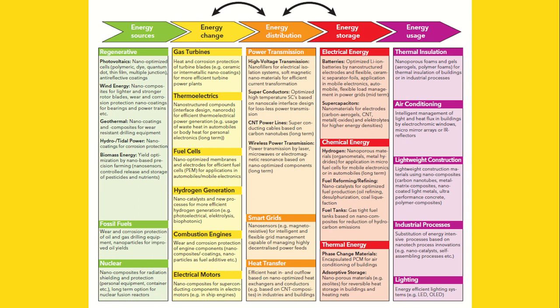The value-added chain includes: energy source, energy chains, energy distribution, energy storage, and energy use. Energy sources include regenerative, fossil fuels, and nuclear. Energy chains include gas turbines, thermoelectrics, fuel cells, hydrogen generation, combustion engines, and electrical motors. Energy distribution includes power transmission, smart grids, and heat transfer. Energy storage includes electrical energy, chemical energy, and thermal energy. Energy use includes thermal insulation, air conditioning, lightweight construction, industrial processes, and lighting.